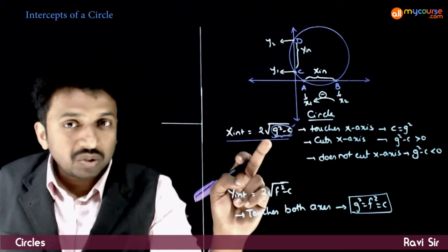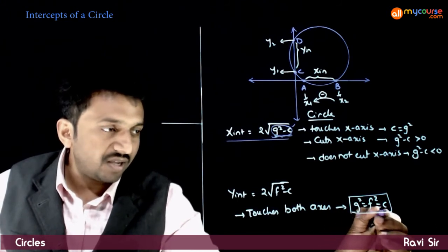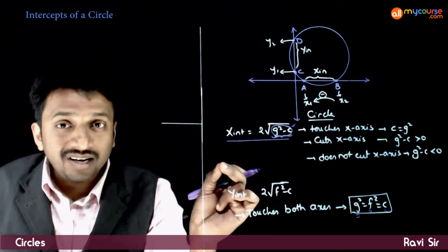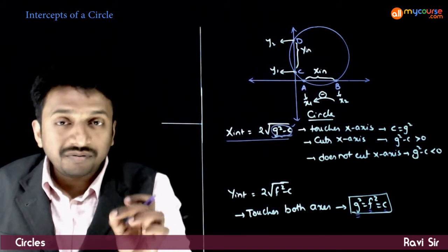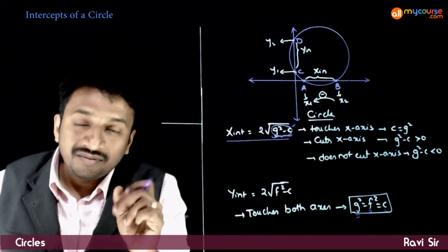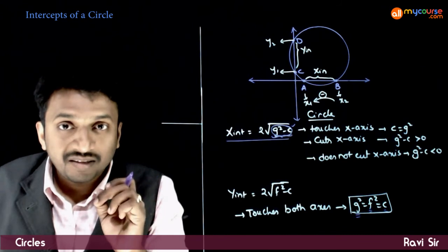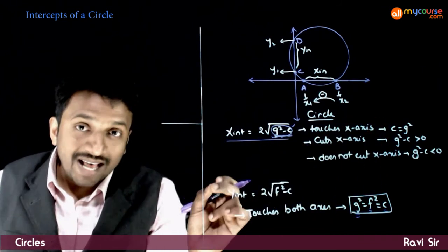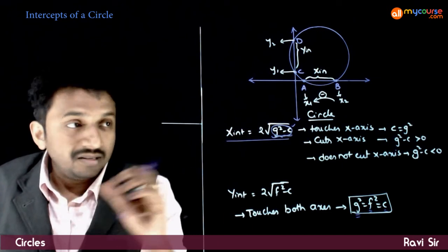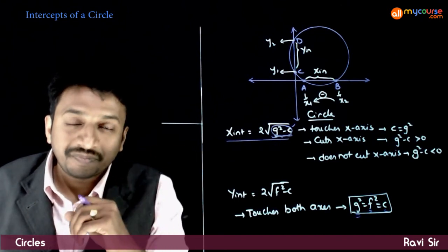If the circle touches both axes, both x-intercept and y-intercept equal zero, so g² = f² = c. These conditions are very similar to those from the topic of special equations — if a circle touches the x-axis, the constant equals the square of half the x-coefficient, which is g²; if it touches the y-axis, the constant equals f². All these concepts are connected. Thank you.